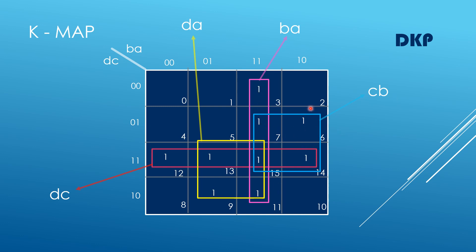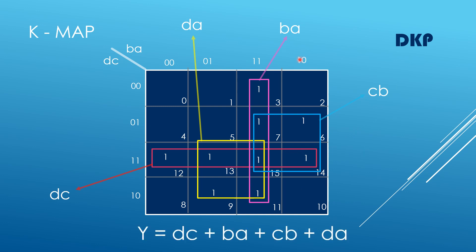For the last group, it represents two rows and two columns. The two columns are 1110 — the second bit changes from 1 to 0, so omit that. The first bit is constant at 1, representing B. The two rows are 01 and 11 — the first bit is changing, so omit that. The second bit is constant and represents C. Therefore the product term is CB. The simplified Boolean expression is Y = DC + BA + CB + DA.